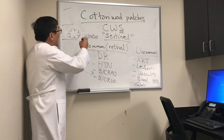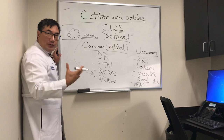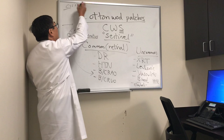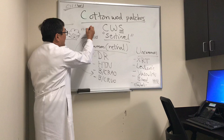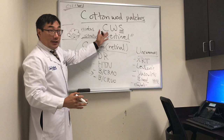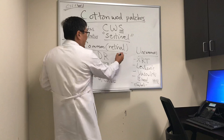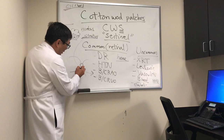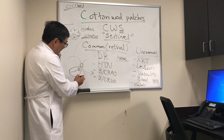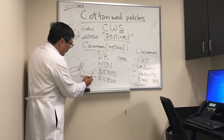Cumulus clouds are big and fluffy and accumulating. The cloud analogy also includes nimbus — a dark cloud — which is a sentinel of dark things. In the eye, the nimbus equivalent is hemorrhage. So if we see cotton wool patches along an artery that are cumulative and white, that's the distinctive finding for branch retinal artery occlusion.